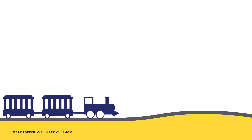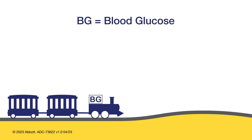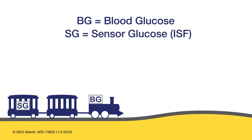A train is a good way to illustrate this concept of lag. Think of blood glucose and ISF glucose as the cars of a train. In the front car of the train is blood glucose, or BG. In the back of the train is the ISF, or sensor glucose, SG.